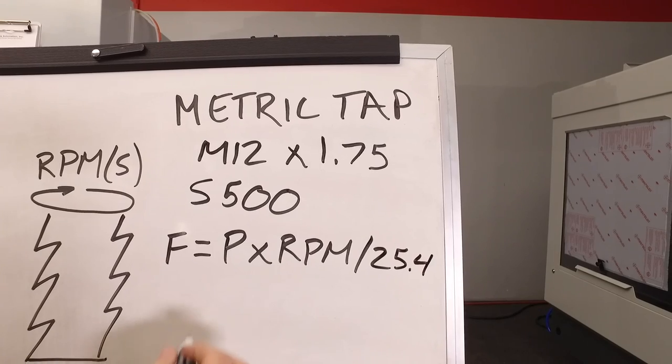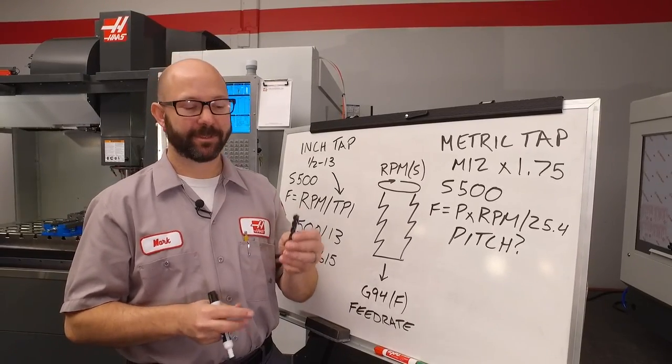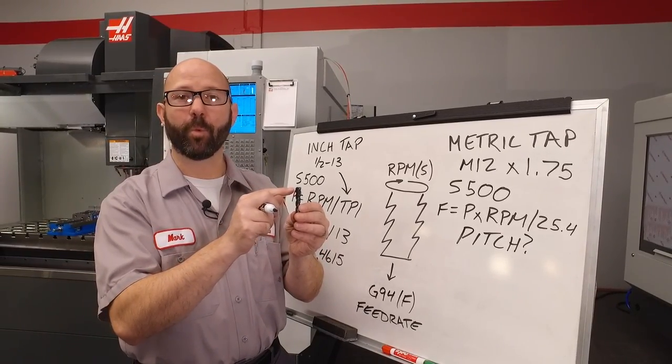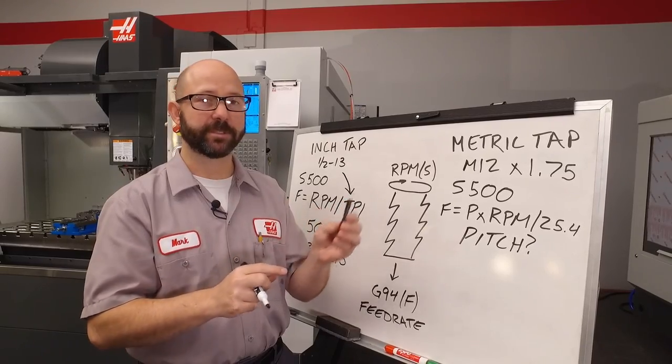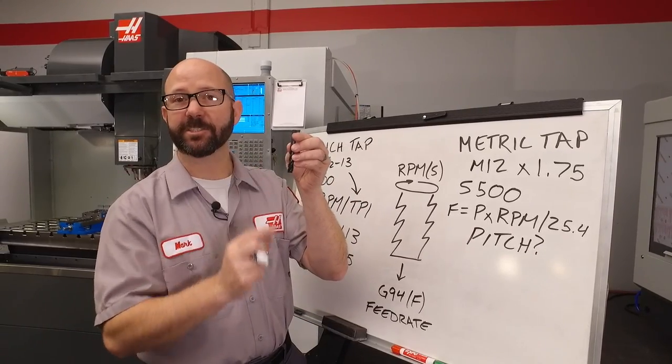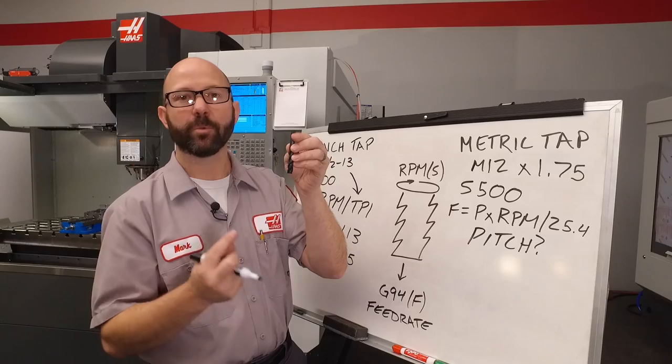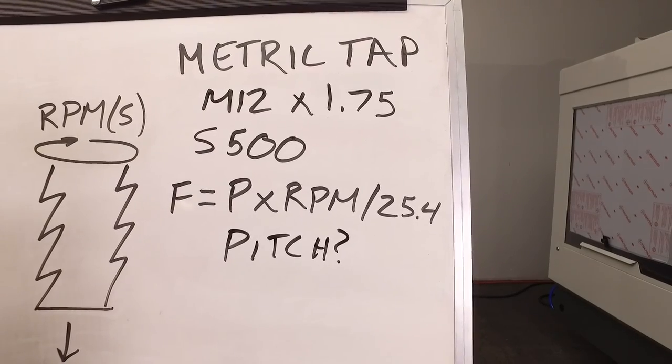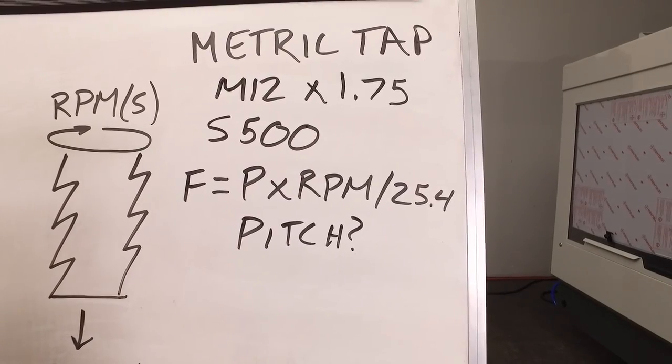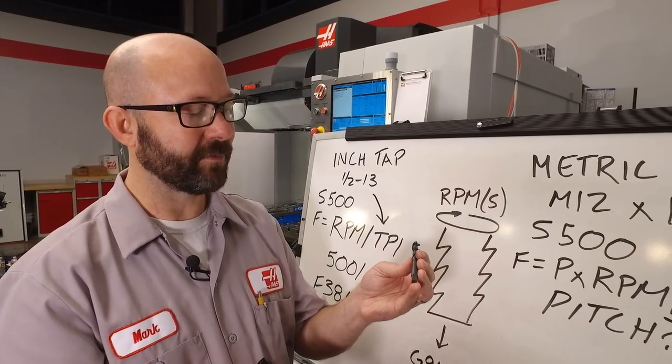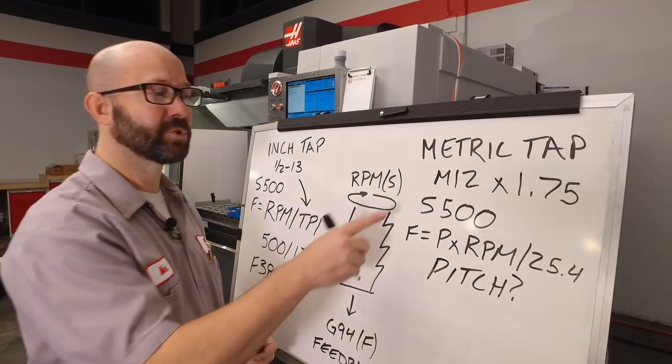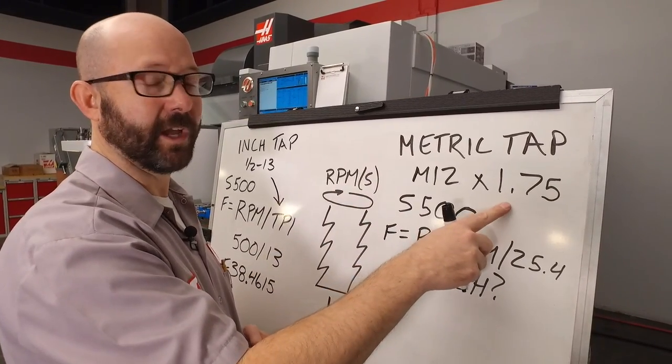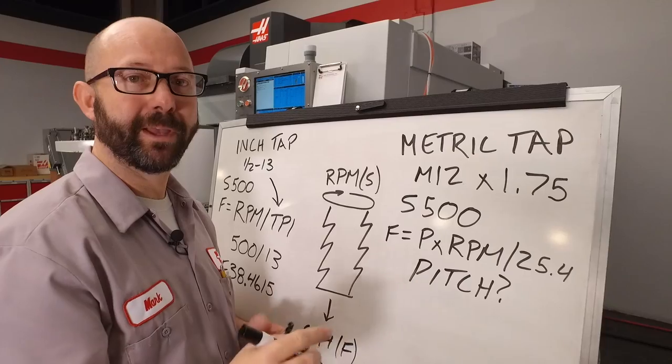Now, what is pitch? No, not that kind of pitch. When we're talking about taps, our pitch is the distance from one thread to the next. And on these metric taps, that also happens to be the distance our Z axis has to travel with each revolution. It's also known as our lead. Now, where do we get our pitch from? Lucky for me, it's actually written on my tap. M12 by 1.75. That M12 is the basic diameter and the 1.75 is our pitch in millimeters.